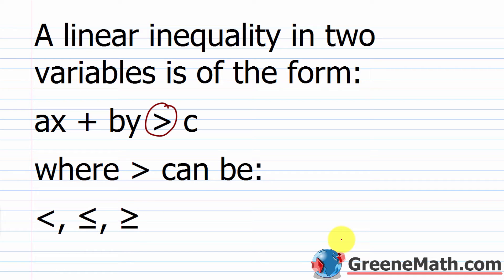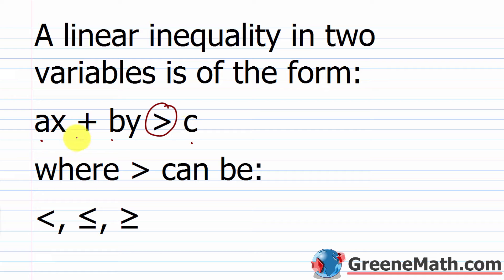Some specific things about this form: we have a, b, and c. a is a coefficient of x, b is a coefficient of y, and c is a constant. So a, b, and c are real numbers, and a and b cannot both be zero — meaning a could be zero, or b could be zero, but they can't both be zero at the same time.